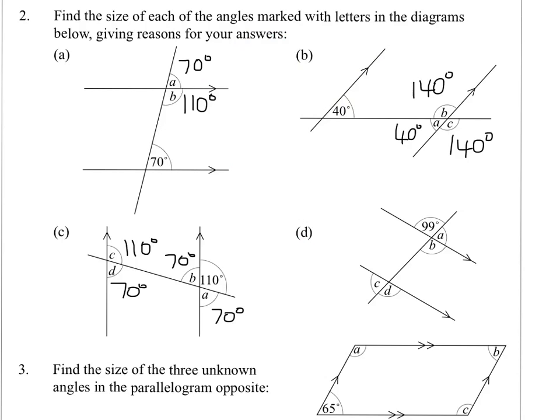And finally, D, we've got here 99 degrees. Straight away, I'll look at B being an opposite angle. So that'll be 99 degrees.